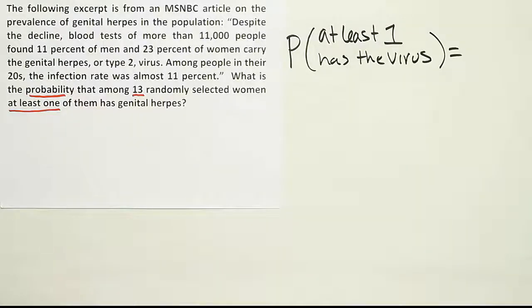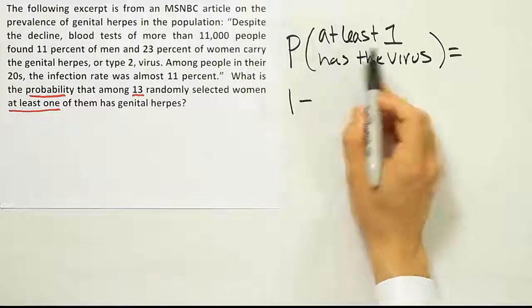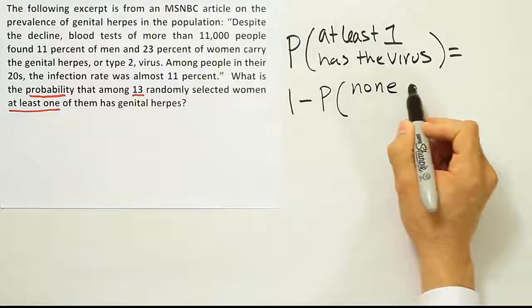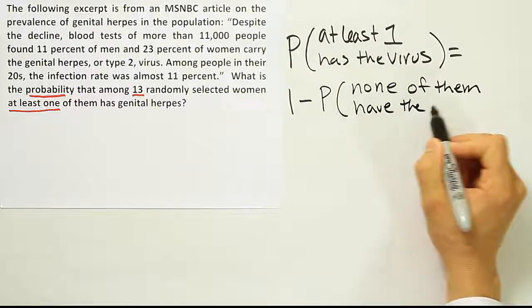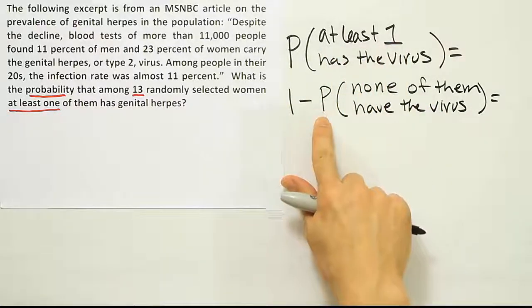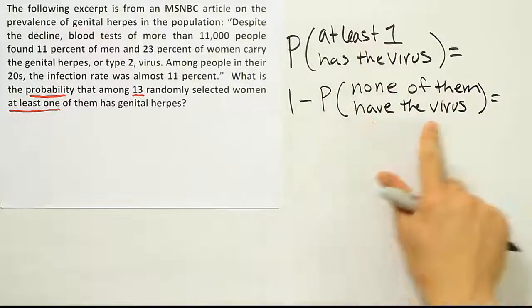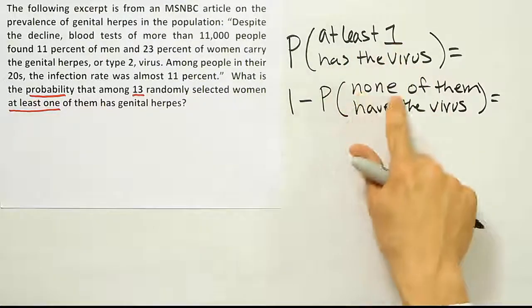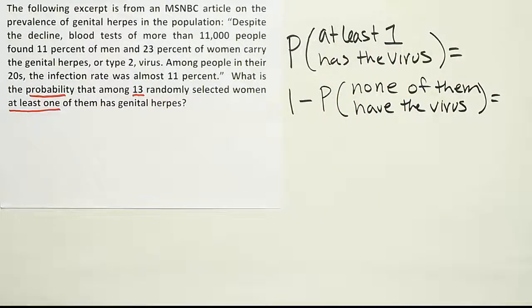Once I have that statement expressed, the next thing to do is write the equality on the other side. The probability of at least one having the virus is always equal to one minus the probability that none of them have the virus. So: at least one corresponds to one minus the probability of none. At least one — none. So the probability of at least one equals one minus the probability of none.